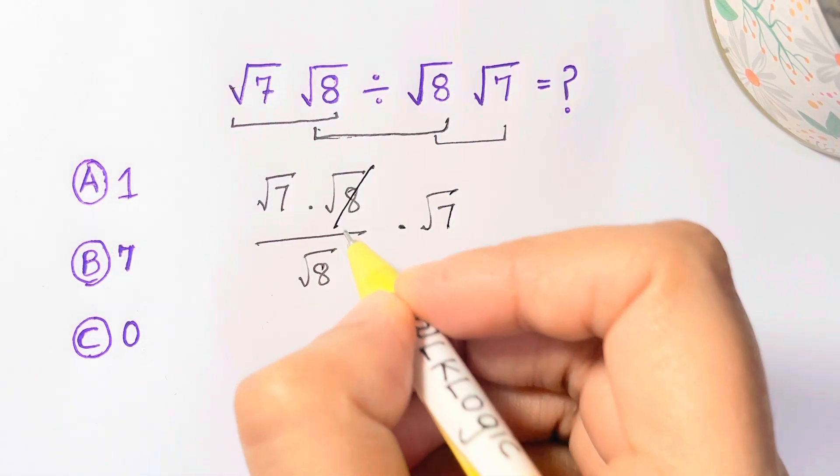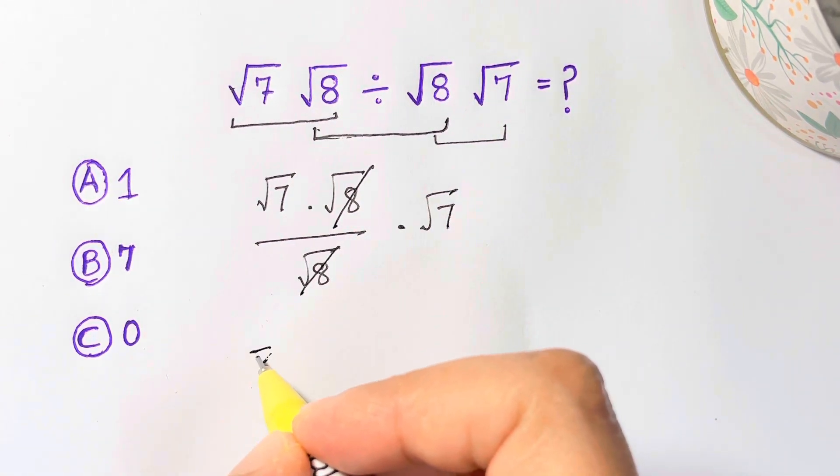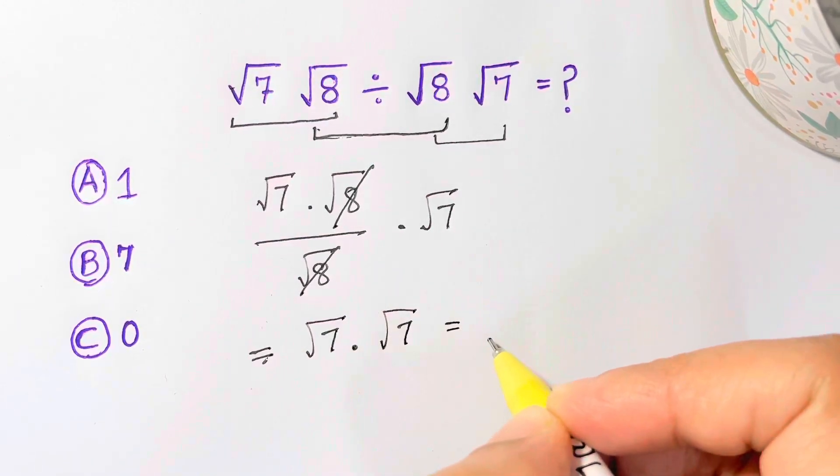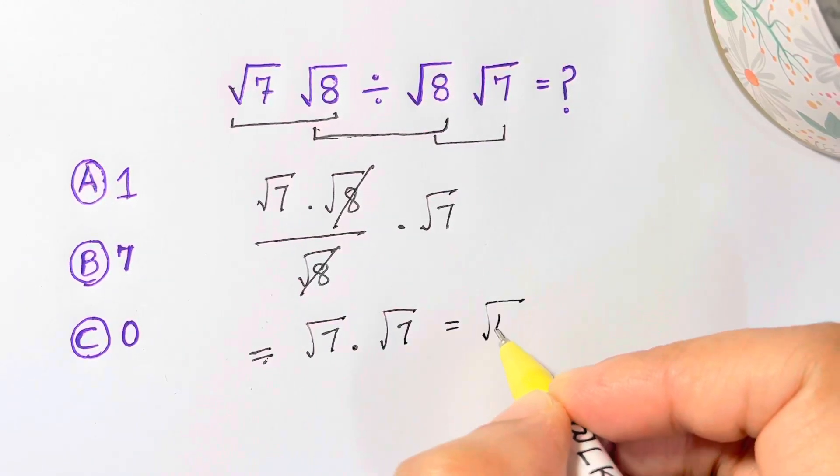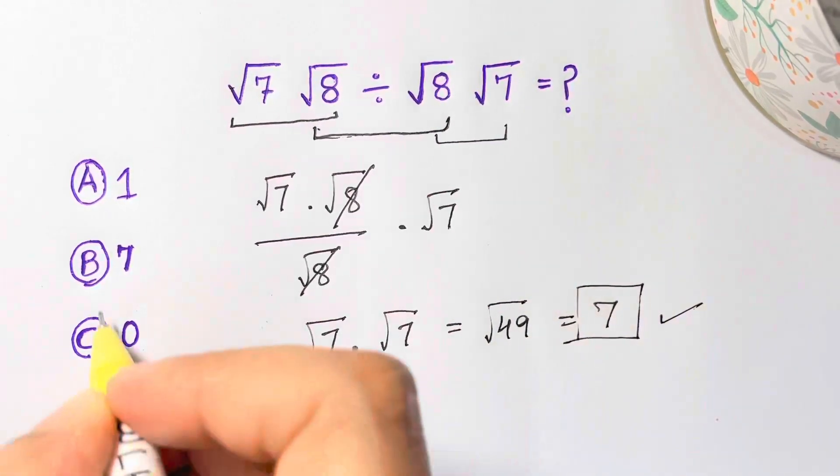So let's cancel out the square root of 8 and square root of 8 from top and bottom. So we are just left with square root of 7 times square root of 7 which is equal to square root of 49 and that's 7. So your answer choice B is right.